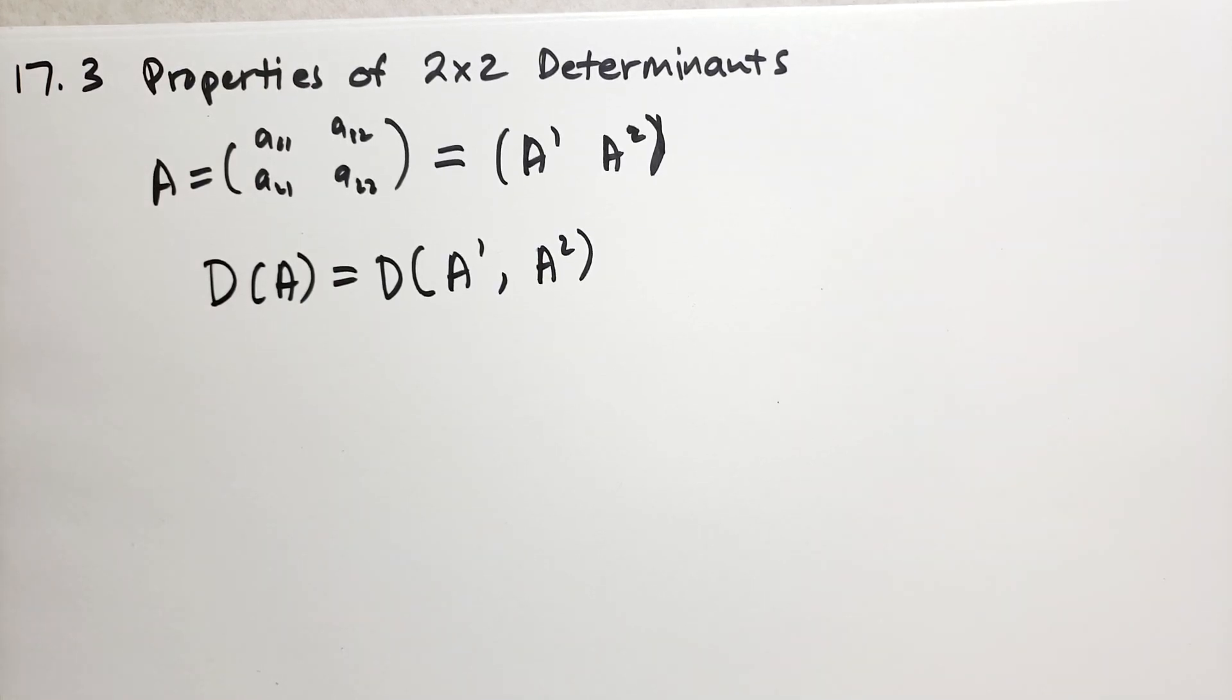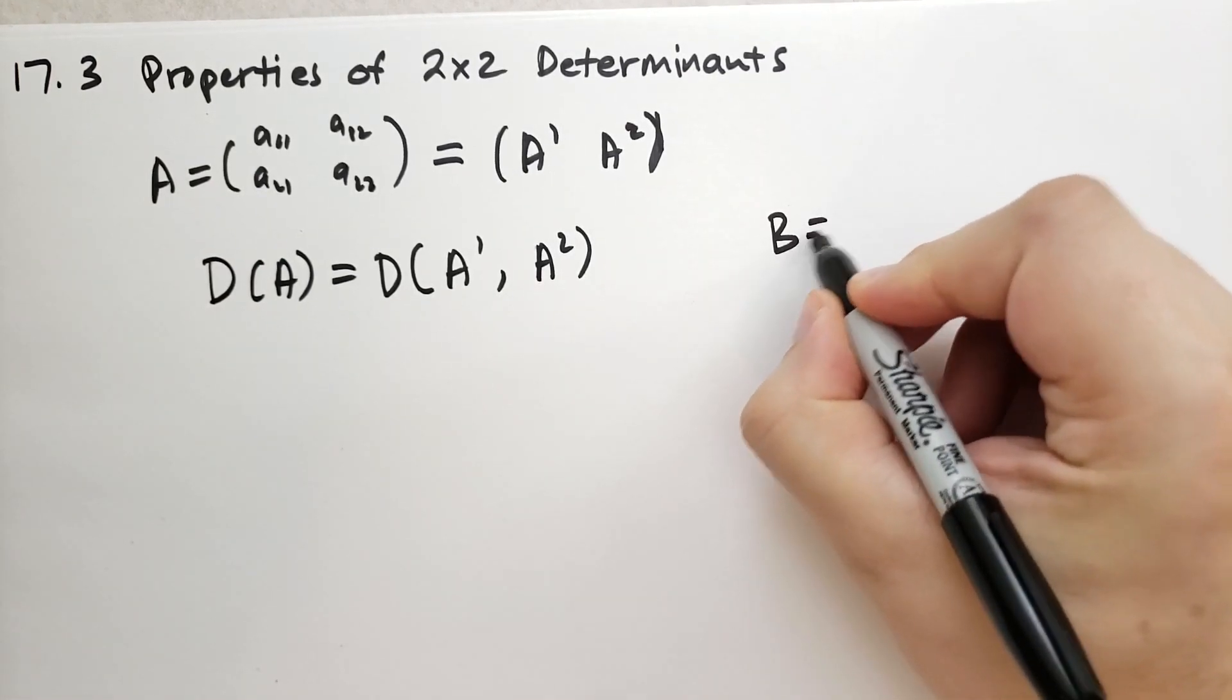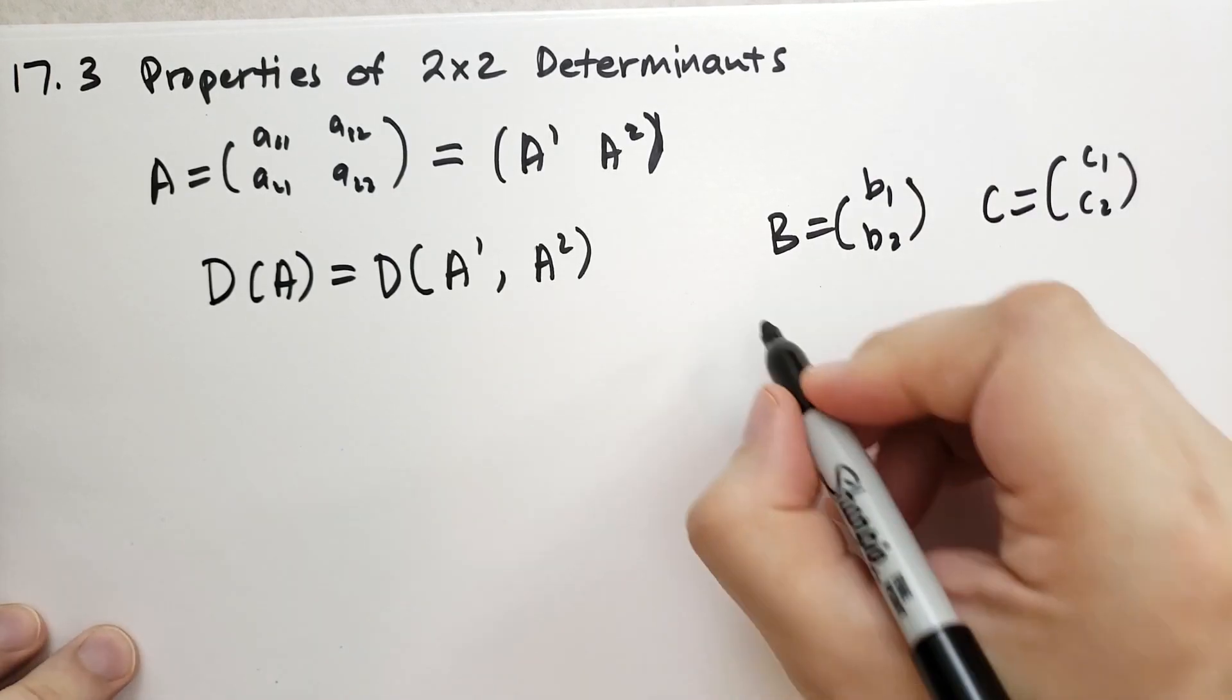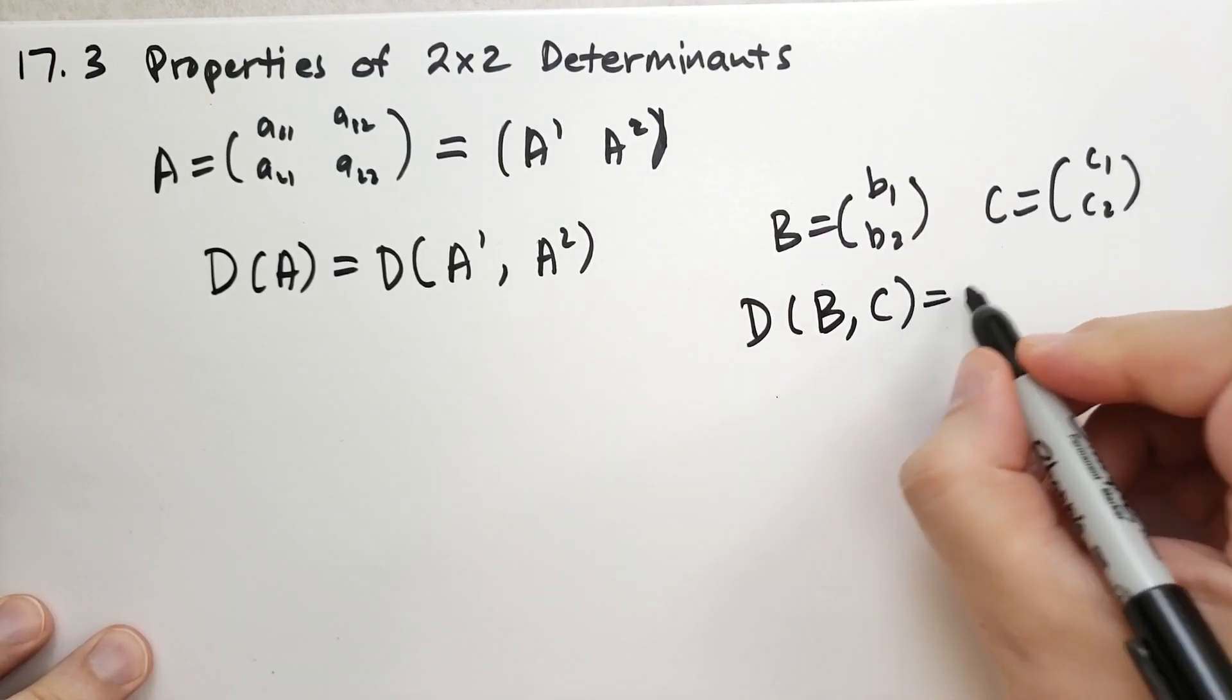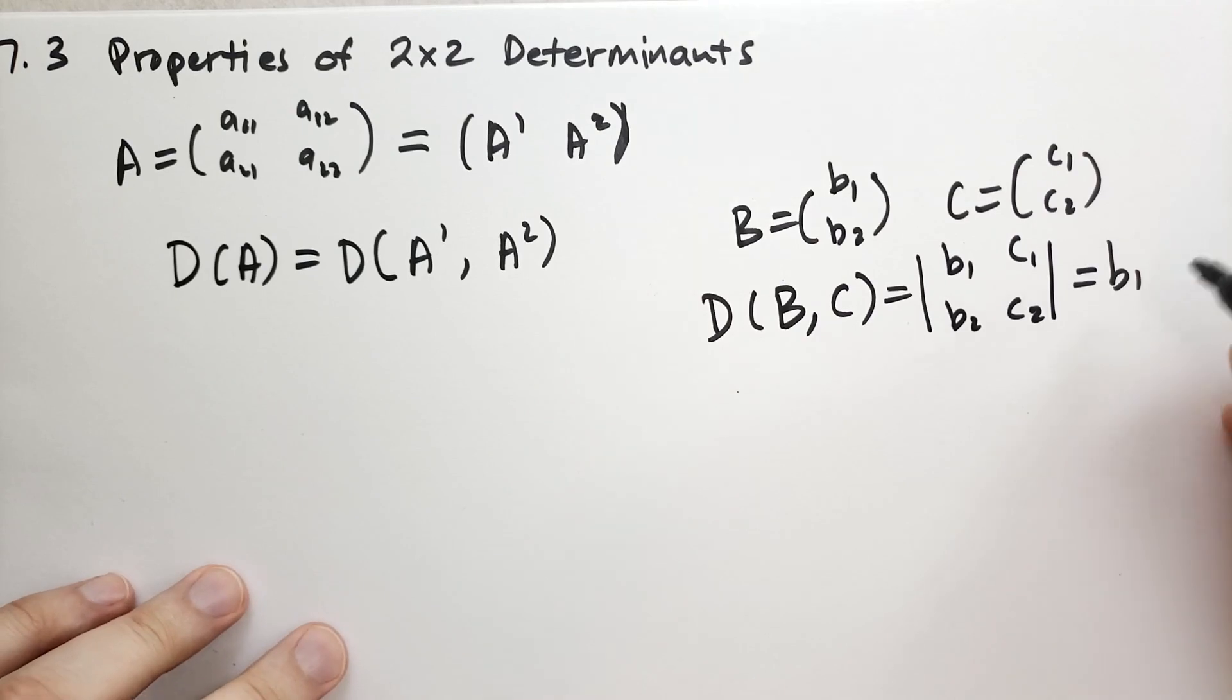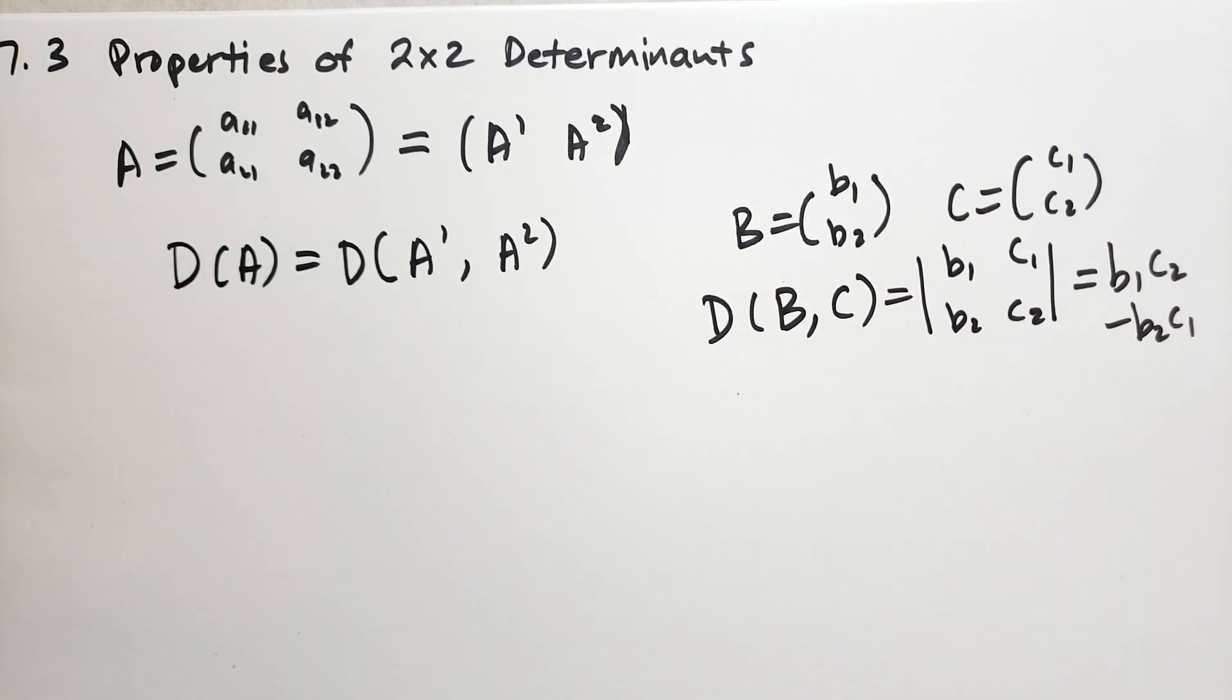So A1 is the column vector A11, A21, and then A2 is the column vector A12 and A22. And so we're going to describe the determinant of A not as a determinant of the entire matrix, but as a determinant of these two column vectors. And so, all of a sudden, the determinant no longer looks like something you do to a matrix, but this looks like some way to multiply or combine these two columns together. This is a very interesting way to think of determinants.